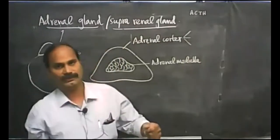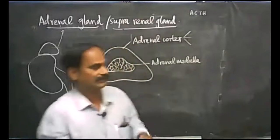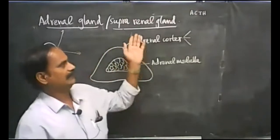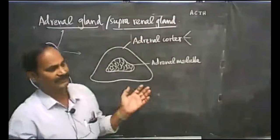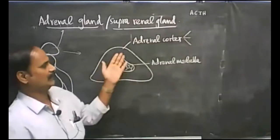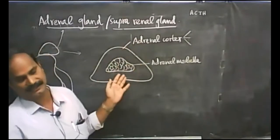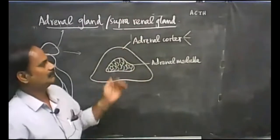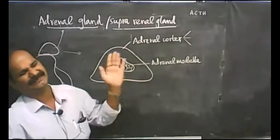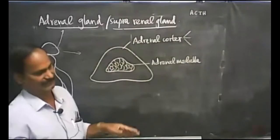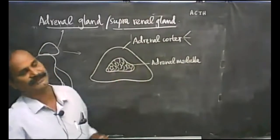We will continue our biology class. We have discussed about the adrenal gland. The adrenal gland contains two endocrine parts: one is adrenal cortex, another one is adrenal medulla. Both are structurally and functionally different, having different cells and basically different hormones.